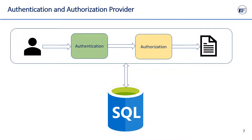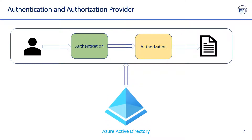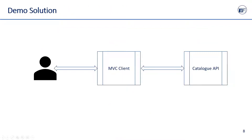Microsoft Identity Platform provides a modern, standards-based authentication solution for applications. We will use Azure Active Directory to secure an API using Azure AD's authentication feature and access it using an MVC app. For the demo, I have prepared a solution which contains two projects: first is the Catalog API, and second is the MVC web app to fetch data from the API.